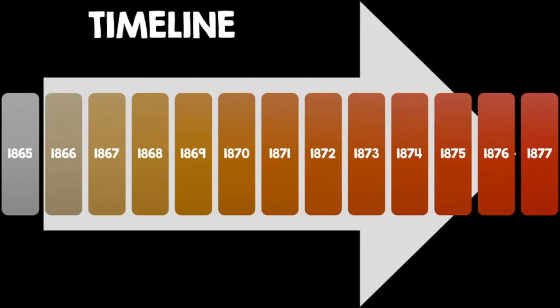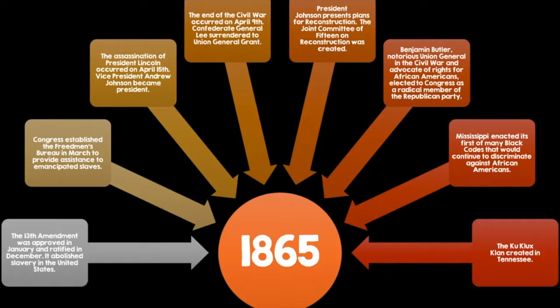In 1865, the 13th Amendment was approved in January and ratified in December, abolishing slavery formally in the United States. Congress established the Freedmen's Bureau in March to provide assistance to emancipated slaves and white refugees. The assassination of President Abraham Lincoln occurred on April 15, and Vice President Andrew Johnson became president. The end of the Civil War occurred on April 9, when Confederate General Lee surrendered to Union General Grant. President Johnson then presented plans for Reconstruction.